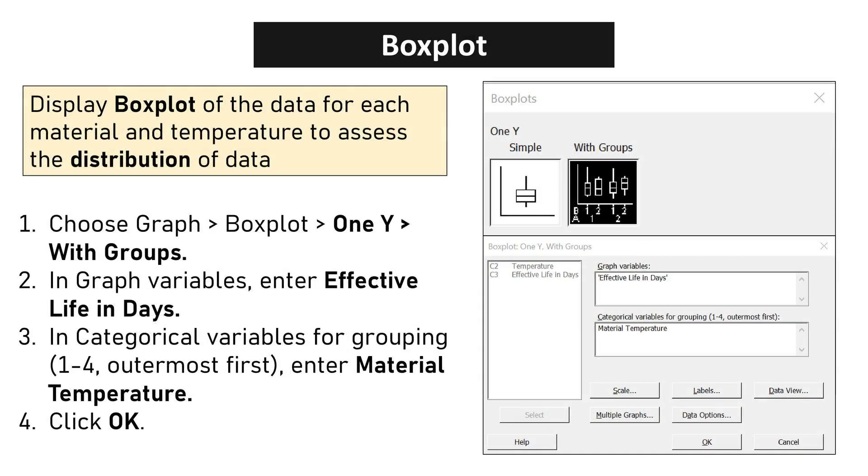Box plots in Minitab visually dissect data distributions across materials and temperatures, offering a clear window into effective life variability. Choose Graph, Box Plot, 1Y with groups. In Graph Variables, enter effective life in days. In Categorical Variables for grouping 1 to 4, outermost first, enter material temperature. Click OK.